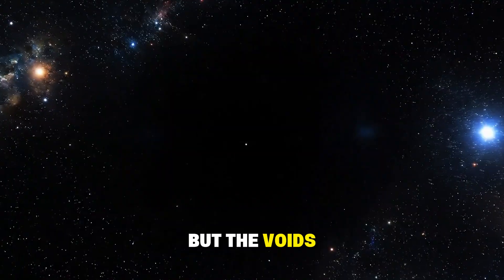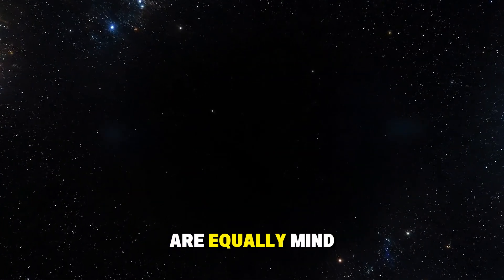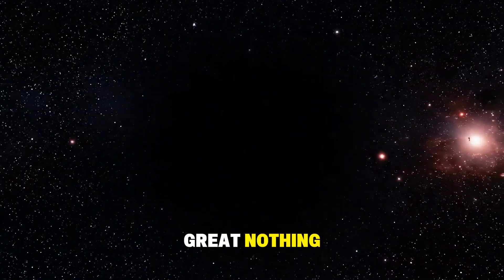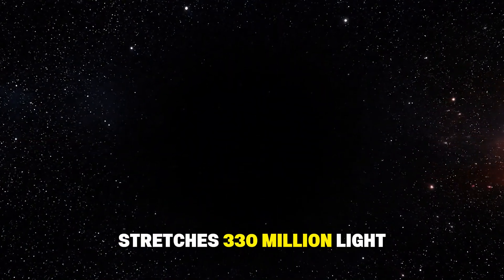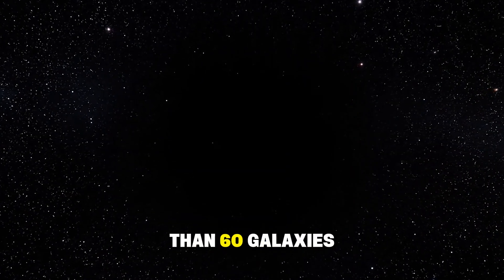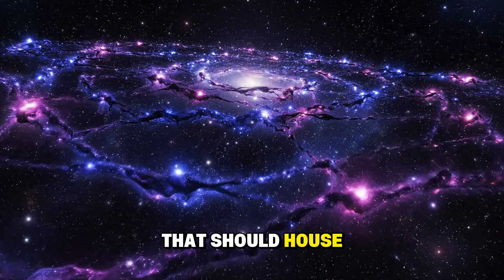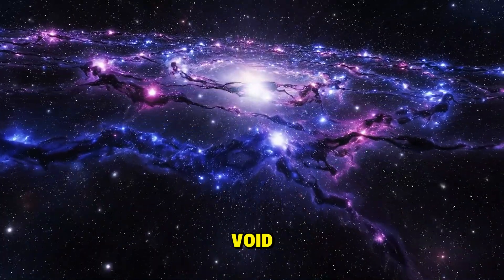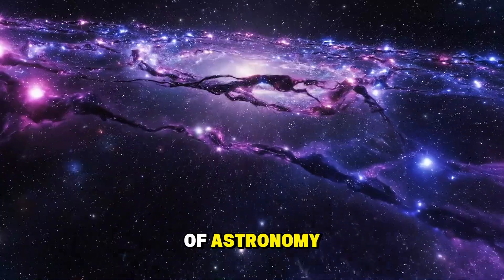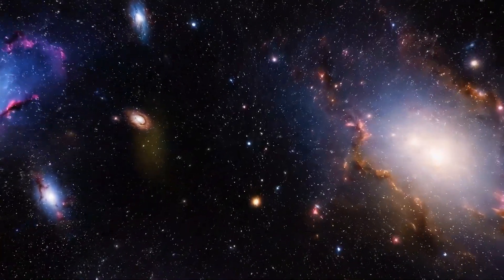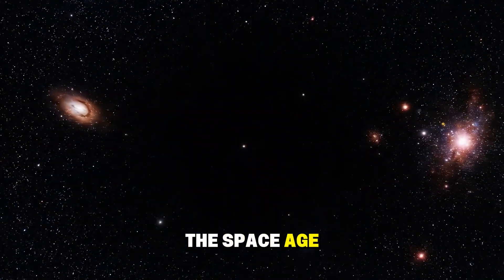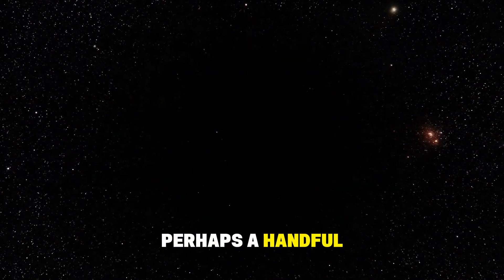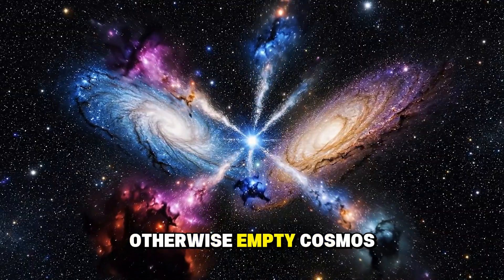But the voids, the empty spaces between these structures, are equally mind-bending. The Boötes void, sometimes called the Great Nothing, stretches 330 million light-years across and contains fewer than 60 galaxies in a region that should house around 2,000. If our Milky Way were located in the center of such a void, our entire understanding of astronomy would have been delayed by centuries. We might have believed well into the space age that we lived in a much smaller, lonelier universe, just our galaxy and perhaps a handful of others scattered across an otherwise empty cosmos.